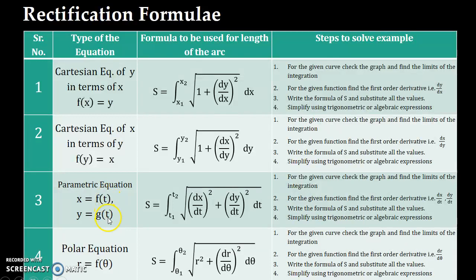So whenever your equation of a graph is given as a parametric equation, the arc length between t1 and t2 can be calculated using the formula s equal to integration t1 to t2 under root of dx by dt whole square plus dy by dt whole square dt.